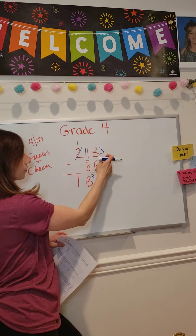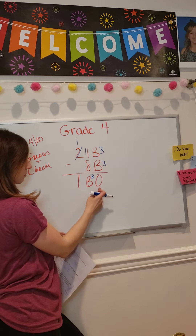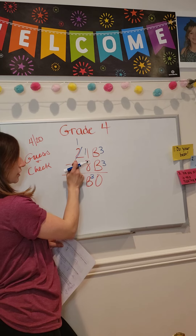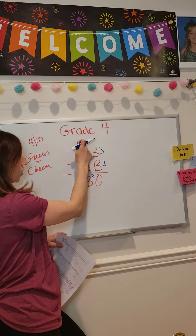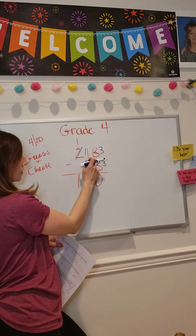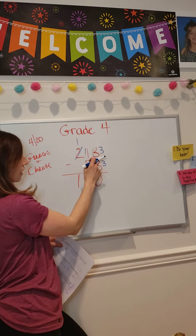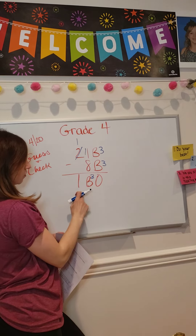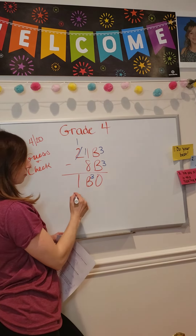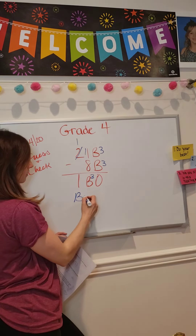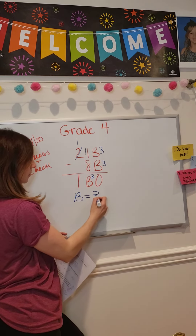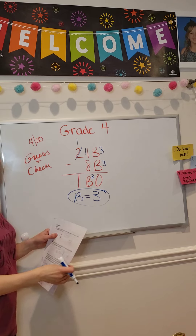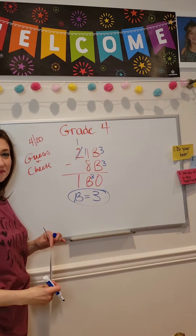So let's say b is 3: 3 minus 3 is 0. 1 minus 8 again I can't do — cross out the 2, make it a 1, this becomes 11. 11 minus 8 is 3. 1 minus 0 is 1. So b is going to be 3, and that is my final answer. See you tomorrow!